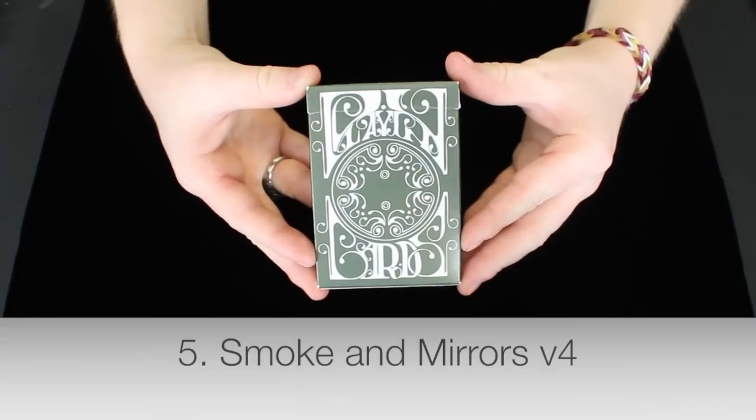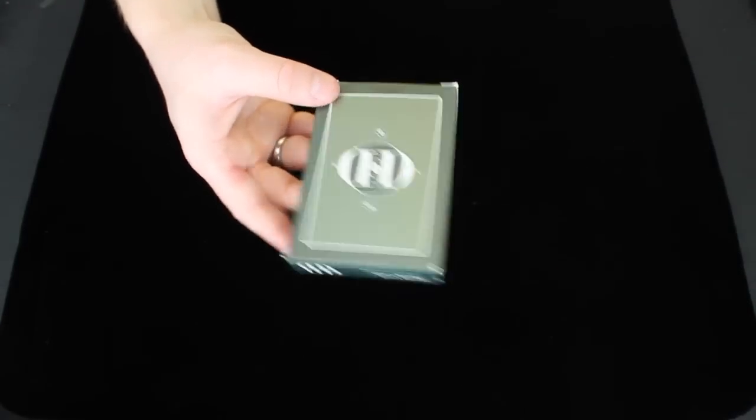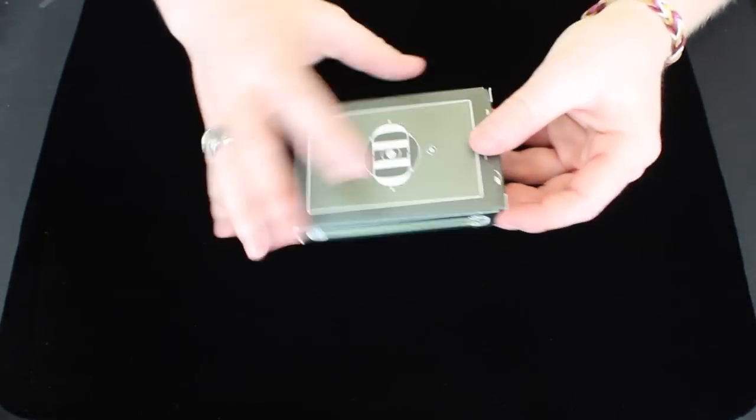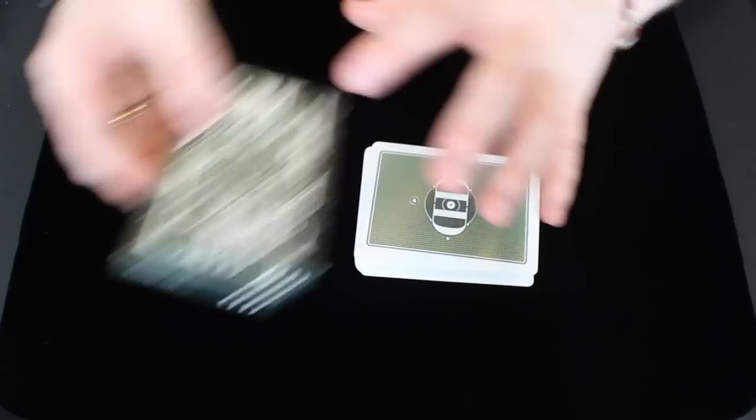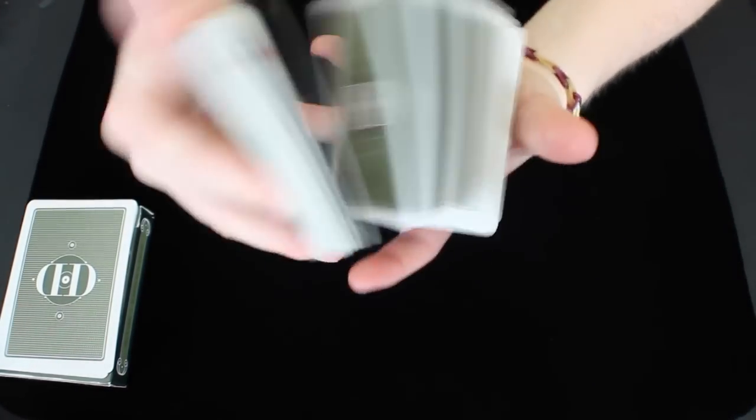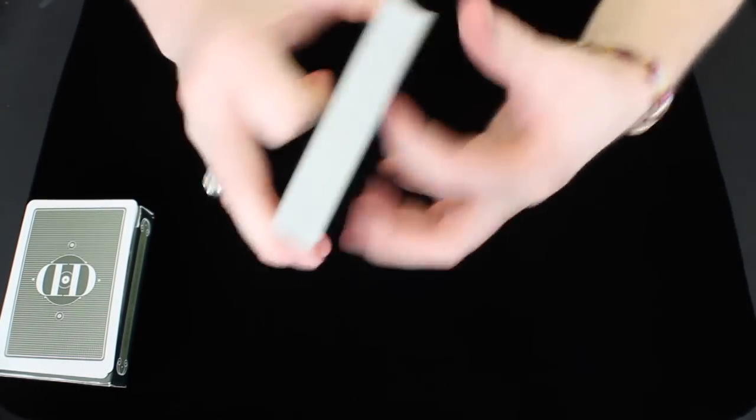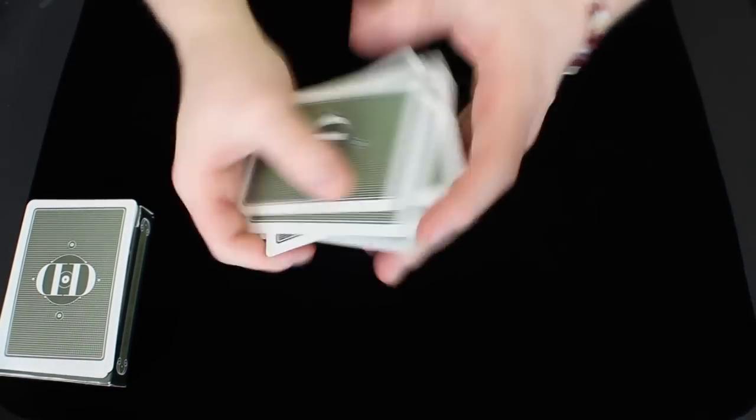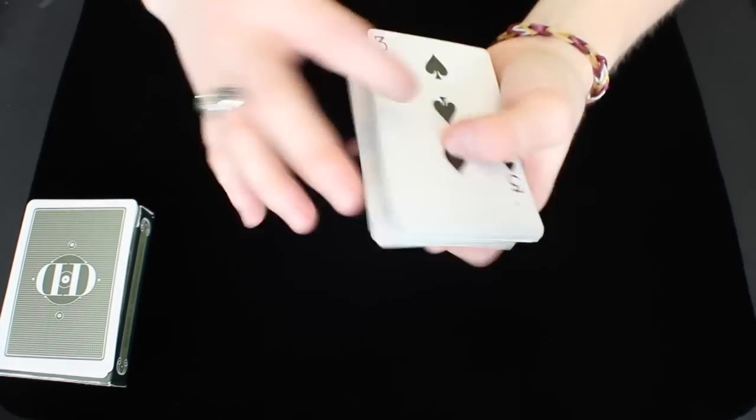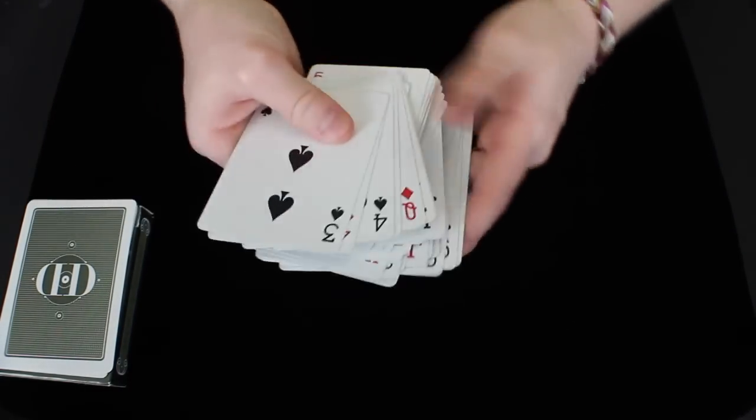At number 5, we have the V4 deck from Dan and Dave. Out of all of the Dan and Dave decks, Smoke and Mirrors decks, I would definitely have to say that this one is my favorite. I love the recycled paper. I love the green look of the deck. And out of all of them, I think this one honestly handles the best. It holds up a lot better than the V5s or the V6s. And it is green. And green is one of my favorite colors. So it's definitely an added plus that this deck is green. I think this is the best deck out of all the newer Smoke and Mirrors V4, V5s, V6s. Because I think it really honestly just handles the best. But it also looks great. The back design, the court cards, the aces, all that good stuff. It's a very well-rounded deck.